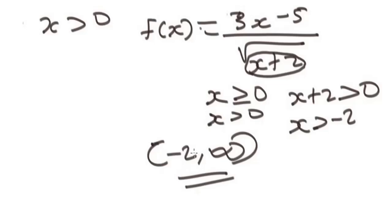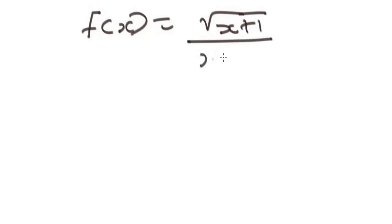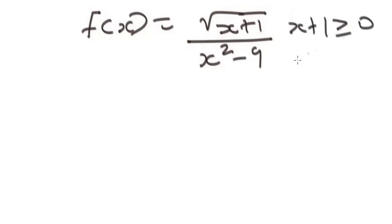For the last example, we have a rational function with a radical: f of x equals the square root of (x plus 1) over (x squared minus 9). There are two conditions: x plus 1 must be greater than or equal to zero, and x squared minus 9 must not equal zero.